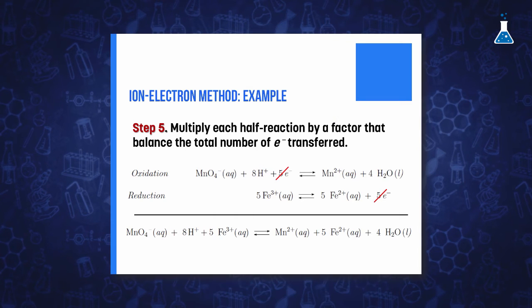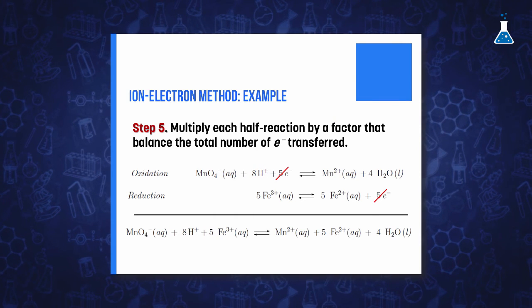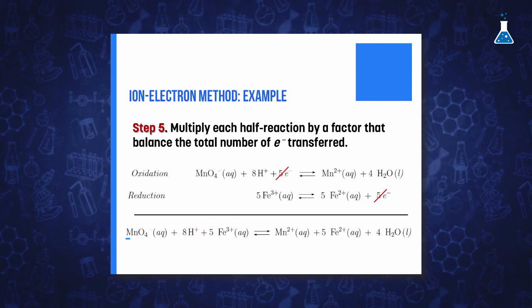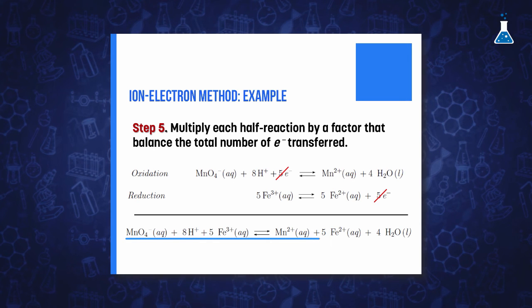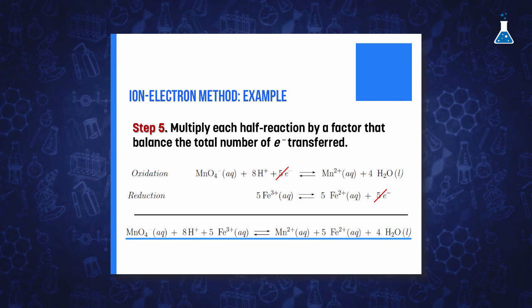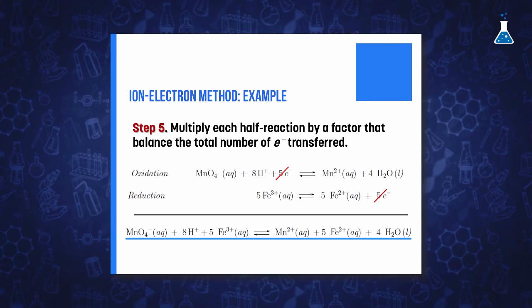Finally, when we add the two equations together, due to the fact that there are the same number of electrons in both sides of the equations, those can be cancelled out and thus they won't appear in the final results. If the hydrogen ions or water molecules had appeared in both sides of the global equation, we would have also cancelled them out.